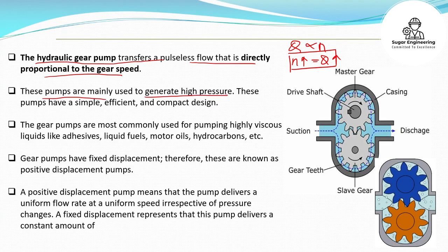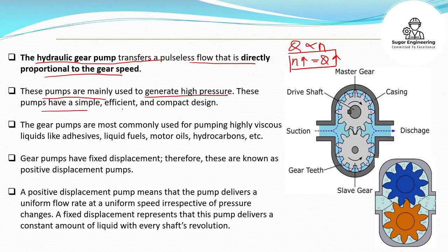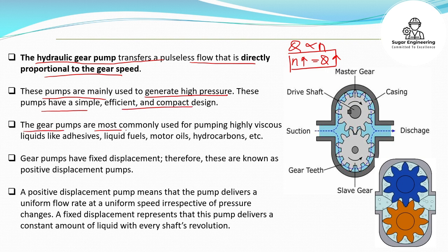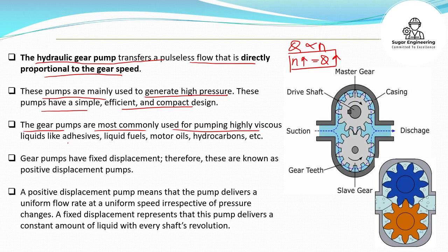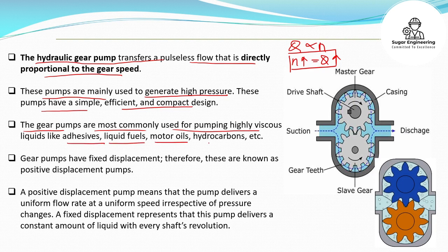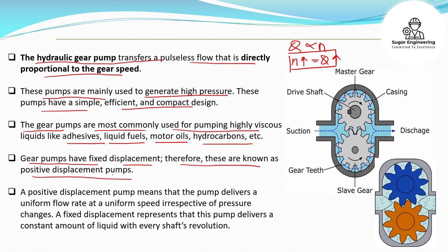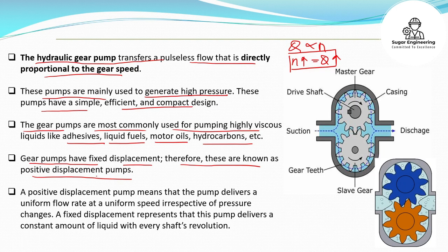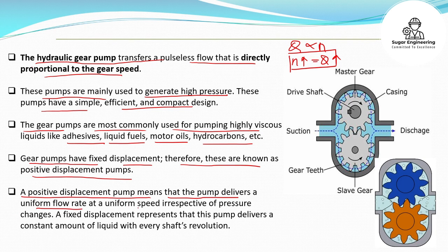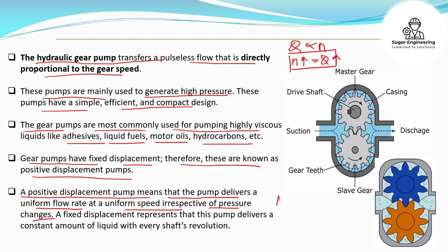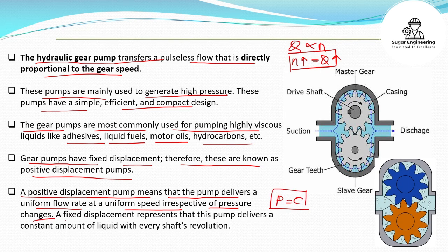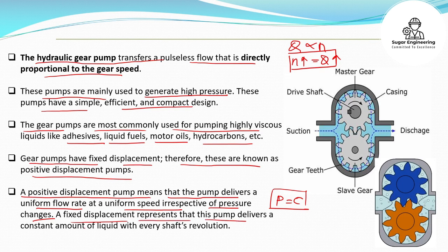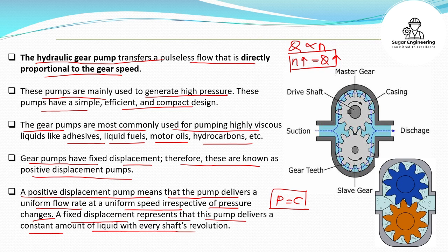These pumps are mainly used to generate high pressure. They have a simple, efficient, and compact design. Gear pumps are most commonly used for pumping highly viscous liquids like adhesives, liquid fuels, motor oils, hydrocarbons, etc. Gear pumps have fixed displacement and therefore are known as positive displacement pumps. A positive displacement pump delivers a uniform flow rate at uniform speed irrespective of pressure changes. A fixed displacement means the pump delivers a constant amount of liquid with every shaft revolution.